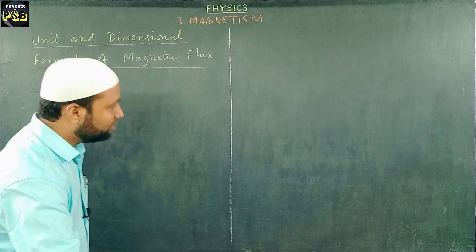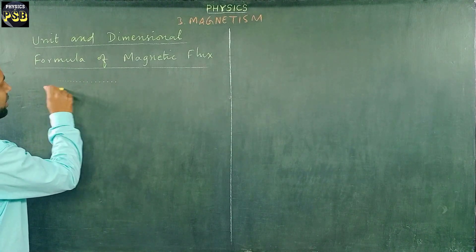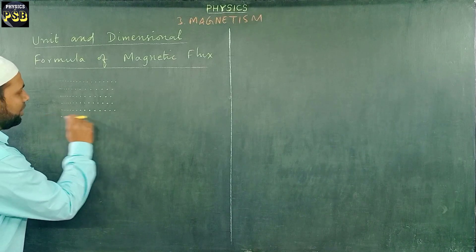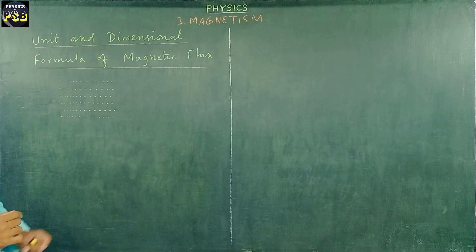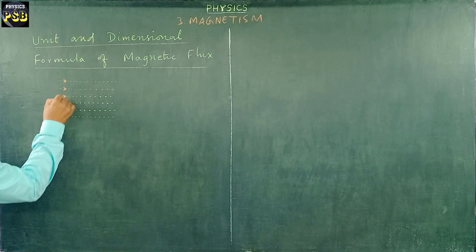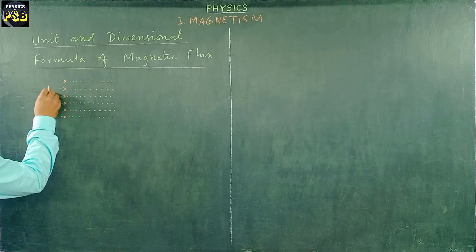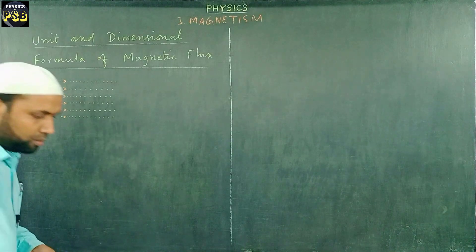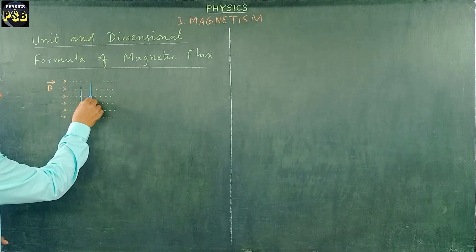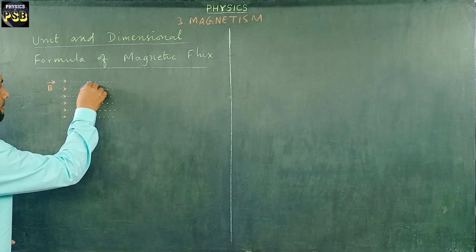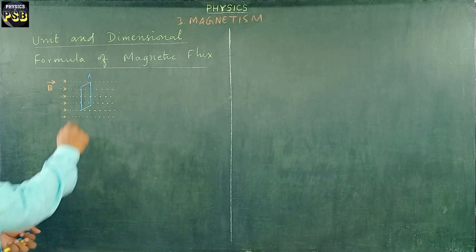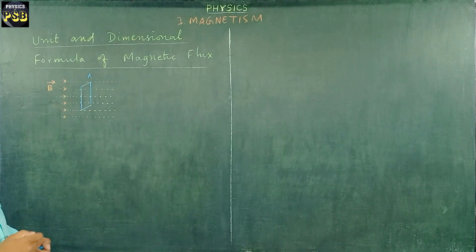For that, I consider a uniform magnetic field — one in which the magnetic field lines are parallel. Here we have one such uniform magnetic field in which the arrow marks represent the direction of the magnetic field. I take a surface here of area A, and the number of magnetic field lines crossing through this area is referred to as magnetic flux.